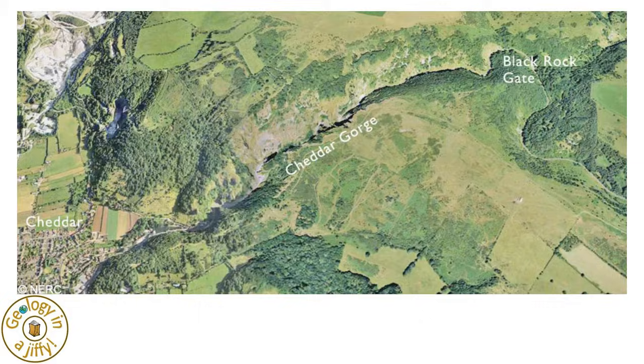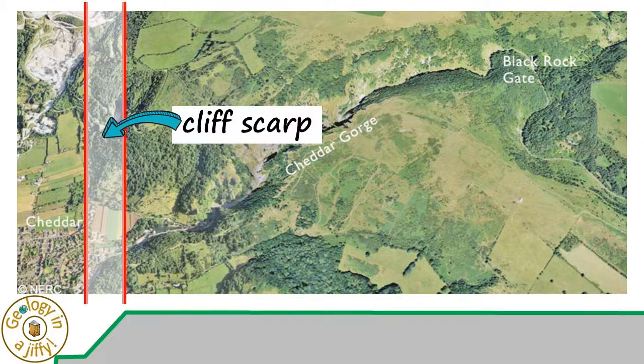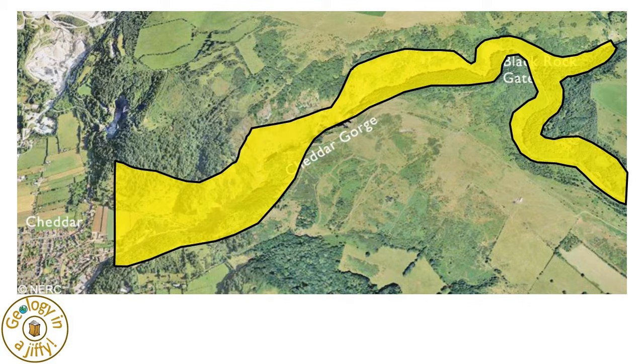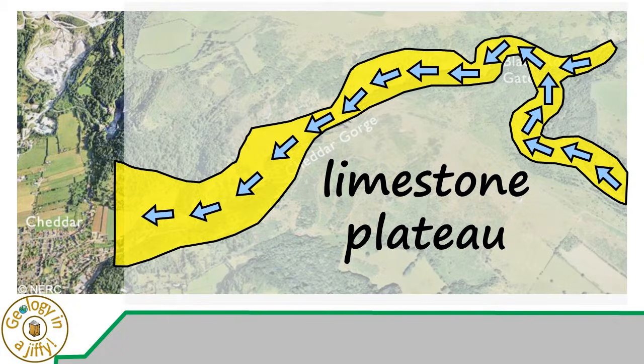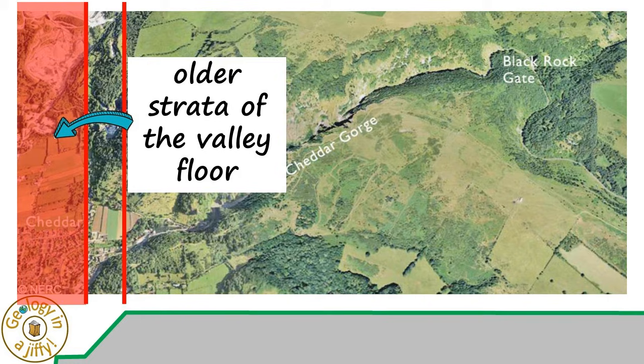Cheddar Gorge, in England, seen from above, winds its way from the cliff scarp, the 137m deep gorge carved by Pleistocene-aged periglacial meltwater floods, down into the carboniferous age limestone that lays above the lower older strata that form the lower valley floor.